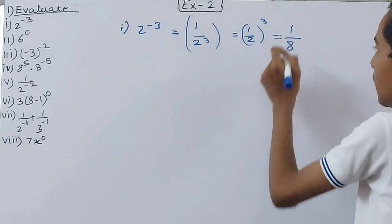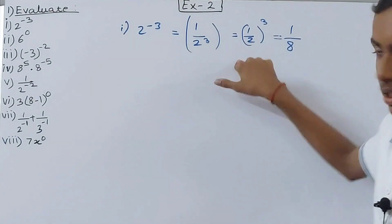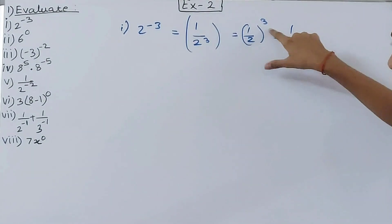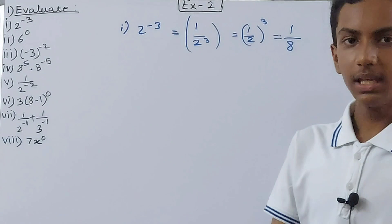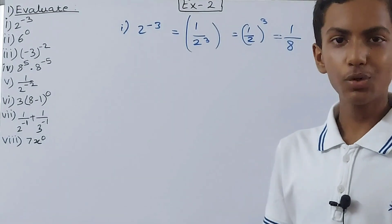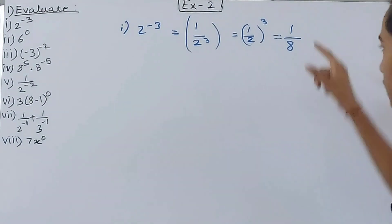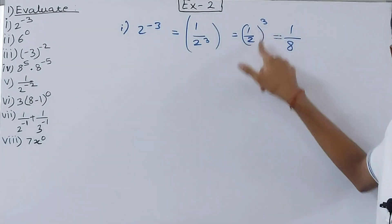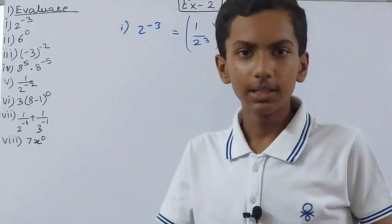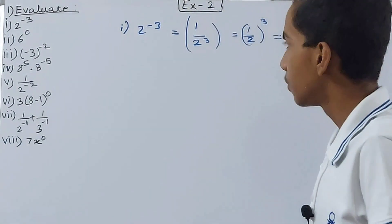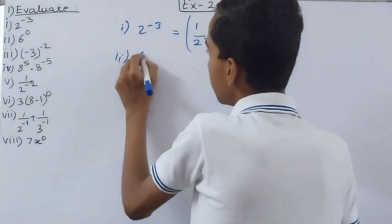Because 1 to any power is 1, so numerator is 1, and 2 to the power 3 is 8, so the answer is 1 by 8. That's how we keep solving the next questions.